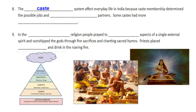Number eight, the caste system affected everyday life in India because caste membership determined possible jobs and marriage partners. Some castes actually had more privileges. We're going to find that if you are a Brahmin at the top of society, you're going to have pretty much all the luck in the world and probably have the easiest life. Whereas if you're a Sudra, life is going to be much harder and you may have to work doing things you don't really want to do.